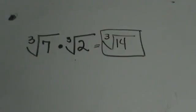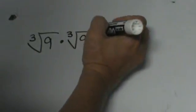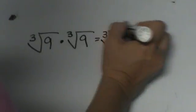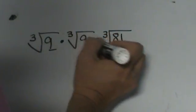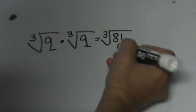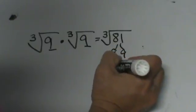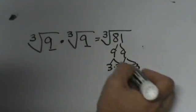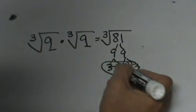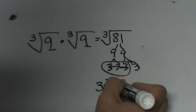Now let's look at one that may have a simpler form. What if we had the cube root of 9 times the cube root of 9? Since we have the same root, we can go ahead and multiply the 9 and the 9 together, giving us the cube root of 81, because 9 times 9 is 81. Now, 81 is 3 times 3 times 3 times 3 times 3, and we can take a group of 3 out, so that ends up being 3 times the cube root of 3.